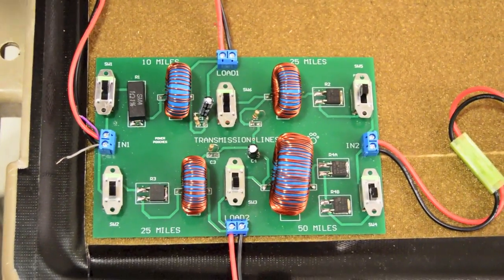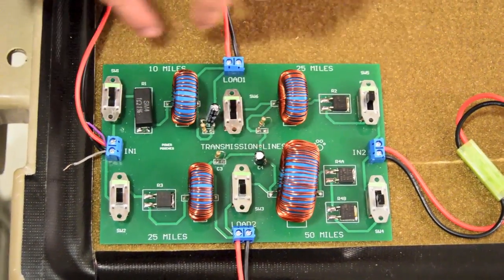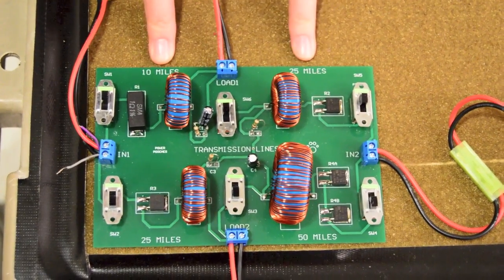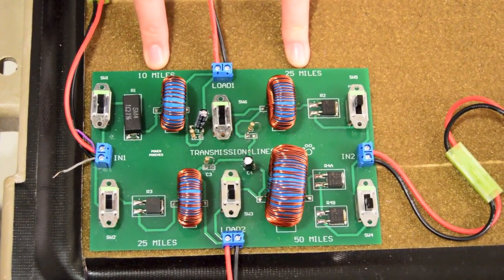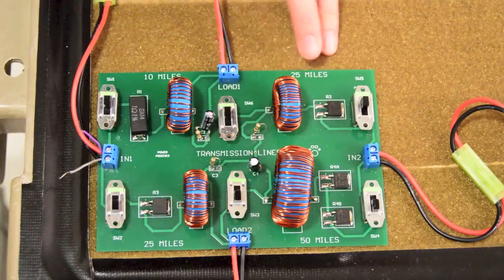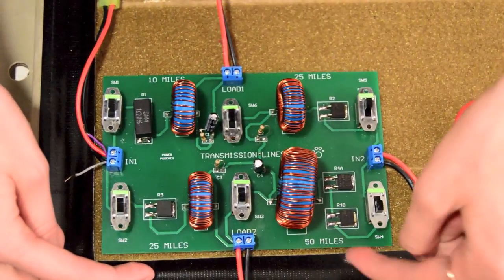As you can see, we have a matrix configuration. In each corner is a different transmission line length, so their RLC characteristics are scaled accordingly. We have 10 miles, 25, 25, and 50.